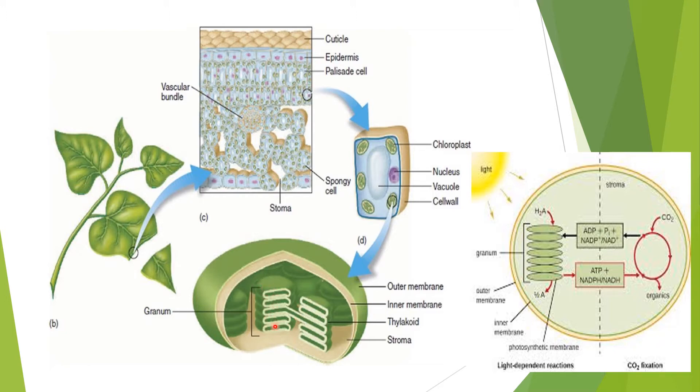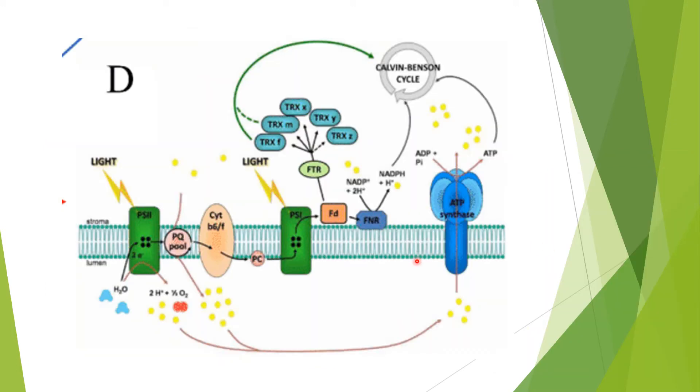Then these are the granum parts which are made up of the thylakoids and this is the stroma part. In case of CO2 fixation reaction, here is the chloroplast with outer membrane, inner membrane, the stroma part, then the granum part. CO2 when enters the chloroplasts combines with ADP and inorganic phosphate, forming ATP, NADH, and carbohydrates.